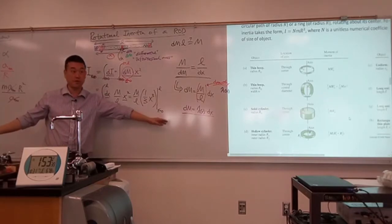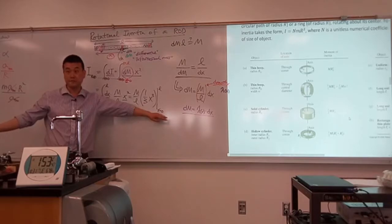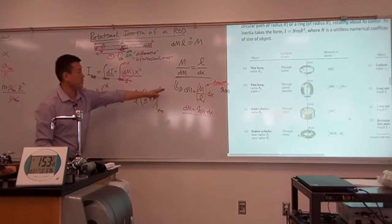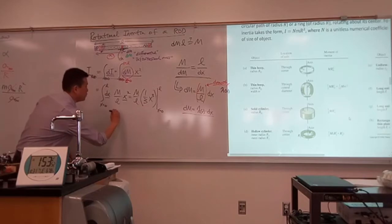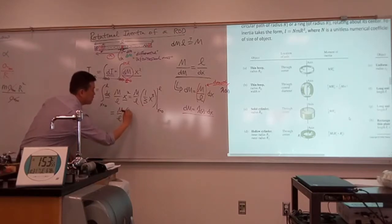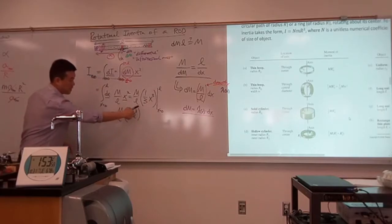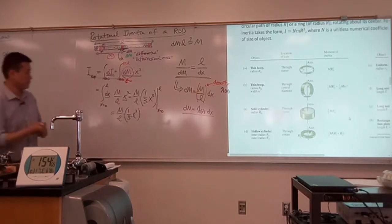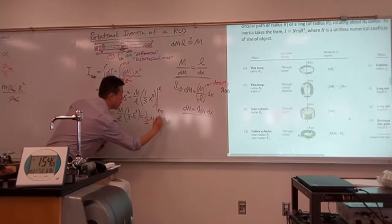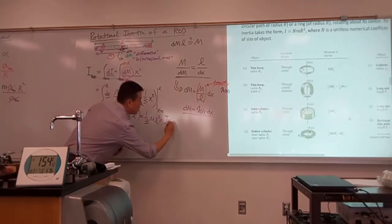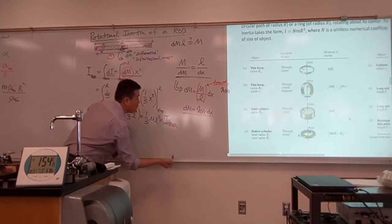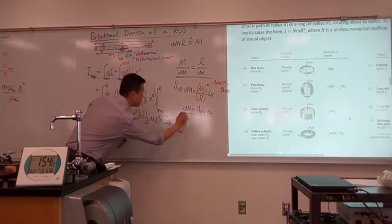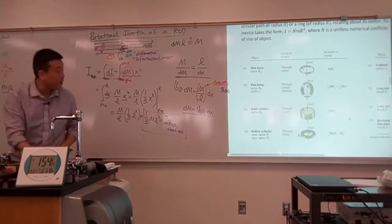This is something you have all seen in calculus class. So let me plug this in. When I plug in zero, I get zero. So I'm just going to get what I get with L. Here I get M over L times one-third L cubed. This L will cancel out one factor there. So you end up with one-third M L squared. This is the rotational inertia of the rod when it's spun about the end — about one of the two endpoints.